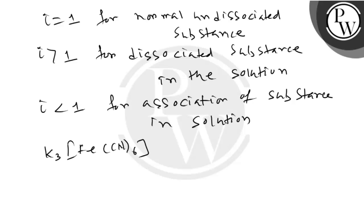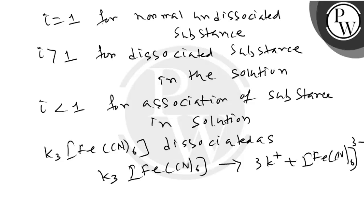K₃[Fe(CN)₆] dissociates as 3K⁺ + [Fe(CN)₆]³⁻. Therefore, number of ions is equal to 4. Therefore, i is equal to 4.